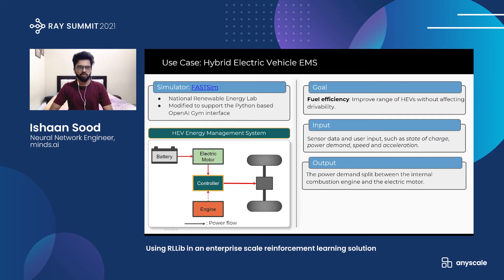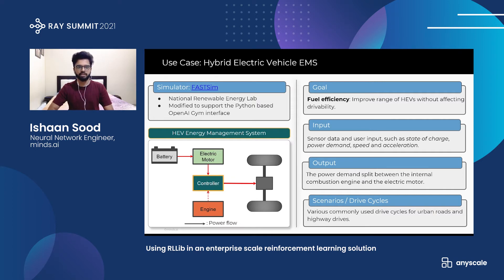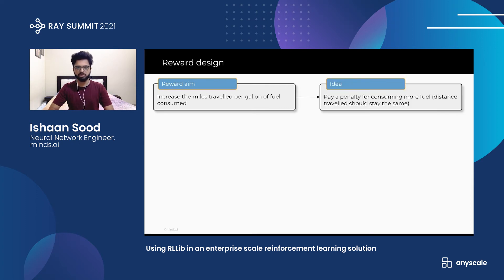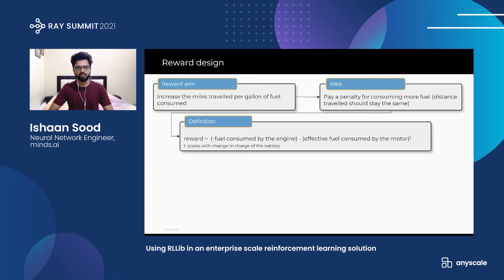To make our RL agent robust, we generate many training scenarios — drive cycles that are variations of urban and highway drive cycles commonly used. A crucial component of reinforcement learning is the design of the reward function. Here, our aim is to increase miles traveled per gallon of fuel consumed, so we pay a penalty for consuming more fuel while the distance traveled remains the same. The reward function is the negative of fuel consumed by the IC engine and the effective fuel consumed by the motor. The fuel consumed by the motor can be negative during regenerative braking when battery charge increases, making the reward entirely positive in those cases.